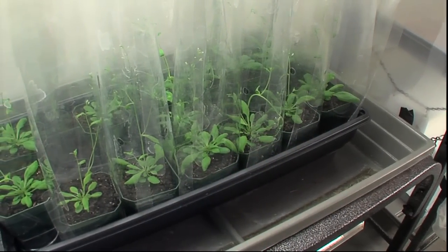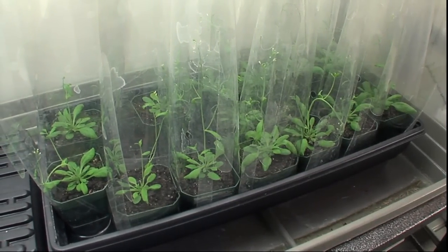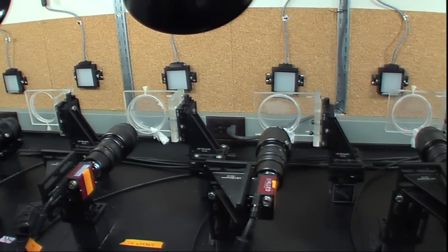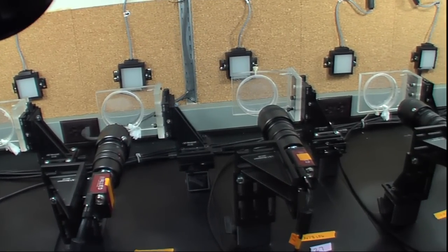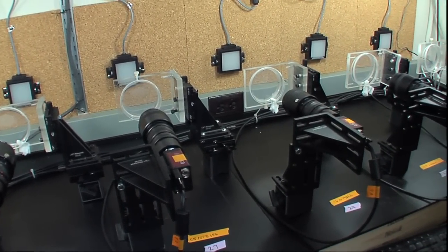Spalding has genetically modified each of these plants so each grows slightly differently. Specially rigged cameras like these snap their pictures once every 30 seconds or so.